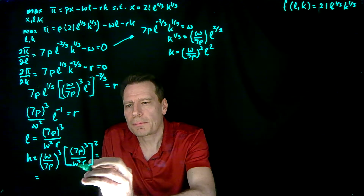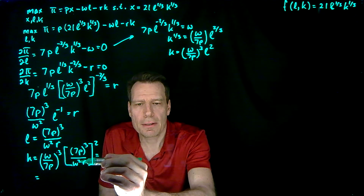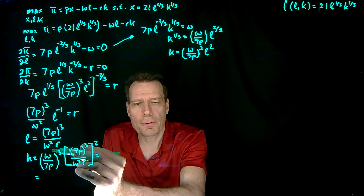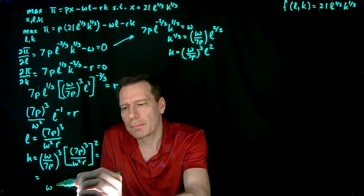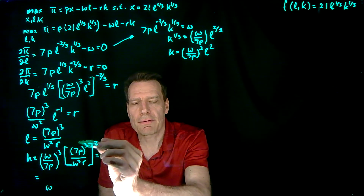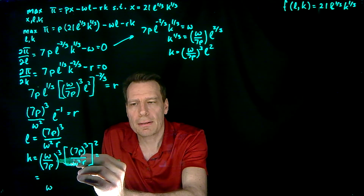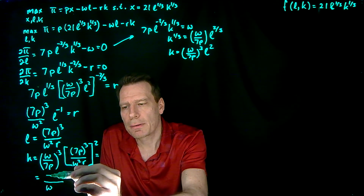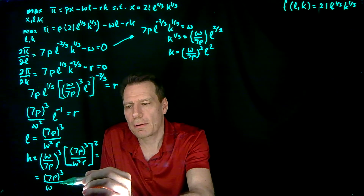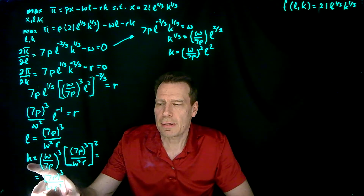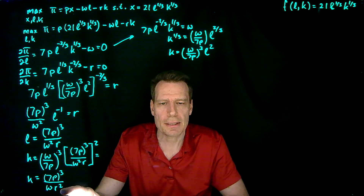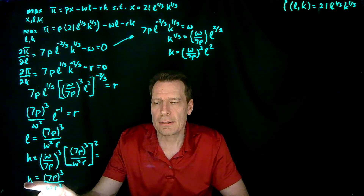Now we simplify. We have W to the third here and W squared that we're going to square again — that puts W to the fourth in the denominator — combined with W to the third, 3 minus 4 gives minus 1, so we get W on the bottom. We have 7P to the third here and 7P to the third squared, giving 7P to the sixth; 6 minus 3 gives 7P to the third on top. And we have R squared on the bottom. So K is just a function of the output price and input prices — that's our capital demand function.